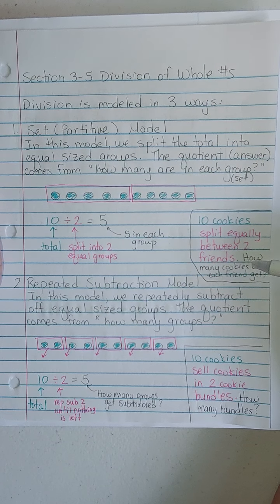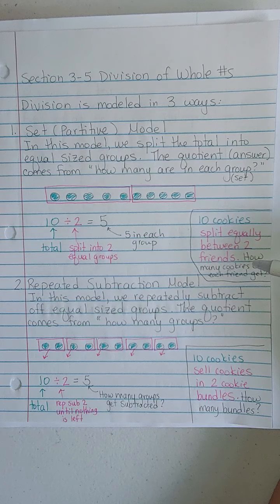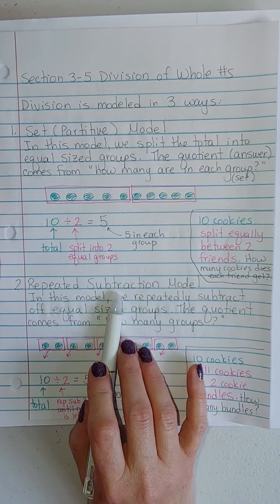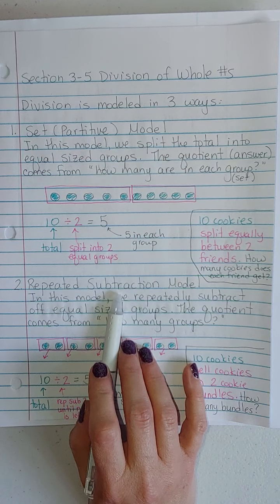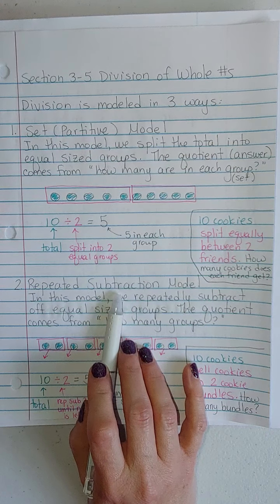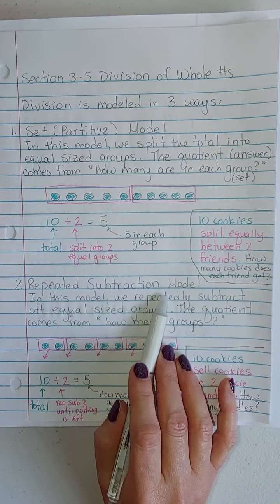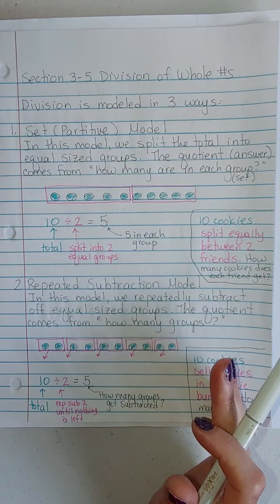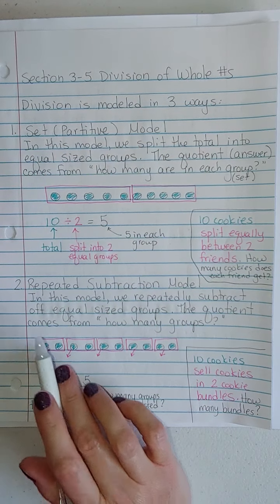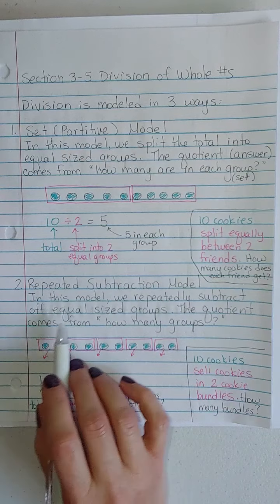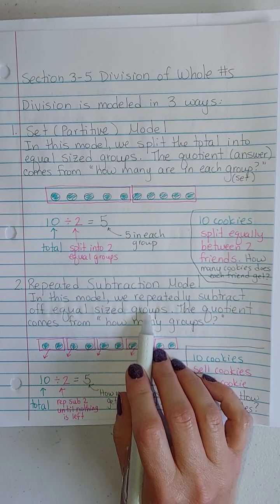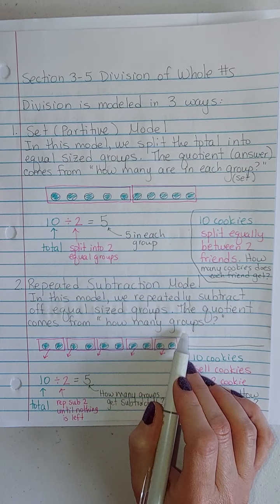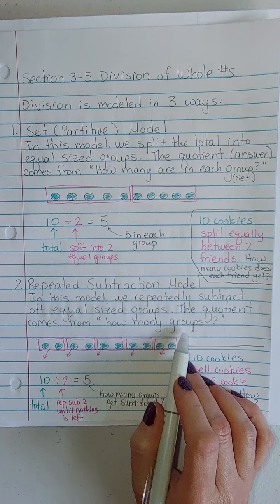Another type of model for division is repeated subtraction. That really shouldn't surprise you, since division is the inverse of multiplication, and multiplication had repeated addition. In this model, we repeatedly subtract off equal sized groups, and the quotient comes from answering the question of how many groups did you take away?